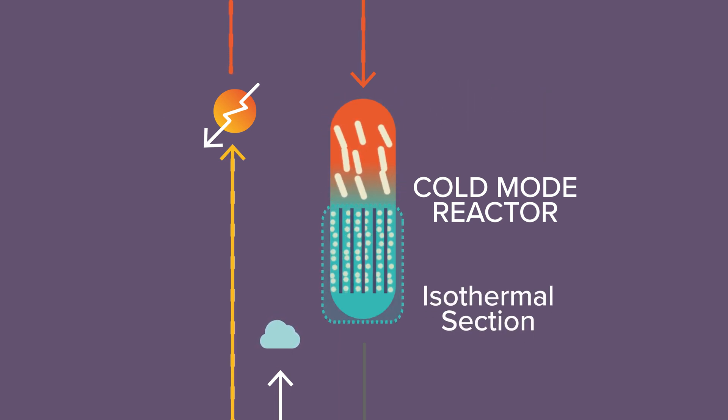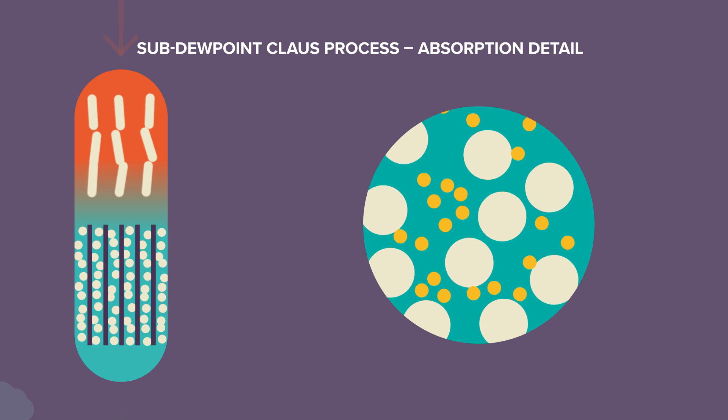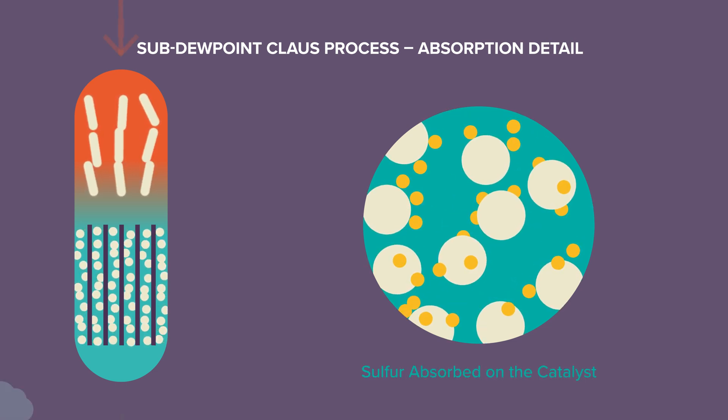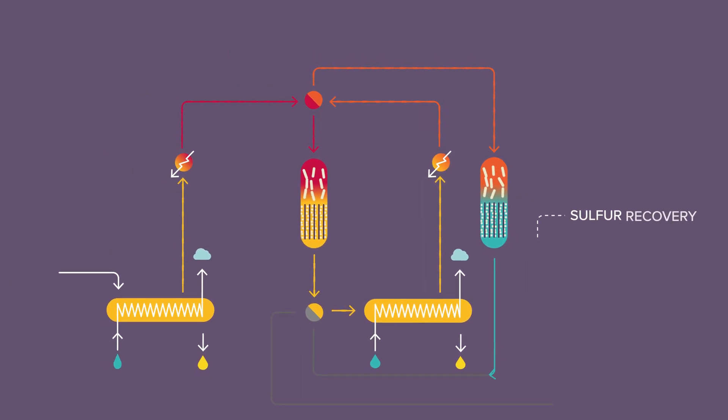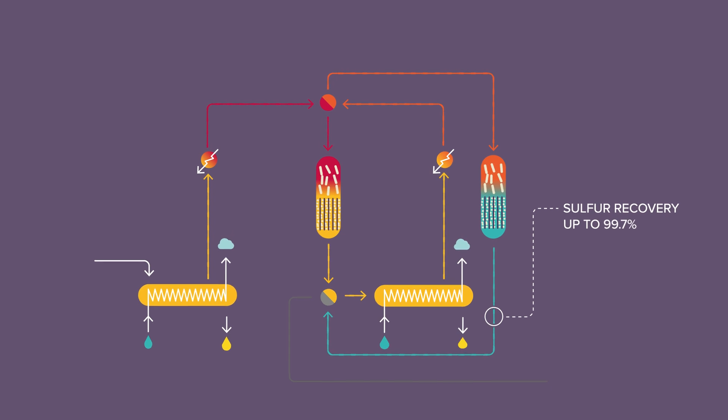In the isothermal section, the process gas is cooled down below the sulfur dewpoint temperature, where elemental sulfur produced is absorbed on the alumina catalyst. Total sulfur recovery at the outlet of the cold mode reactor can reach up to 99.7%.